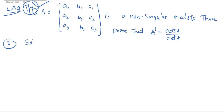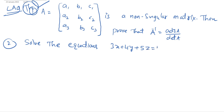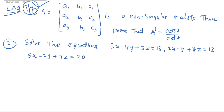Solve the following equations: 3x + 4y + 5z = 18, 2x − y + 8z = 13, 5x − 2y + 7z = 20, by matrix inversion method.